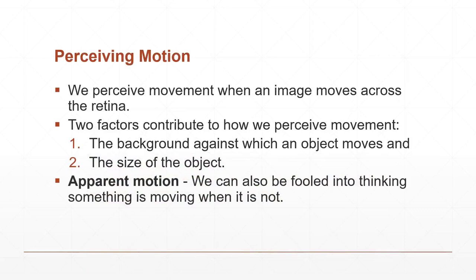Besides color, we also perceive motion. We perceive movement when an object moves across the retina. Two factors contribute: the background against which an object moves, and the size of the object. Sometimes we think smaller objects move faster than larger ones. We can also convince ourselves something is moving when it is not — as in the laser pointer conformity experiment — this is called apparent motion.